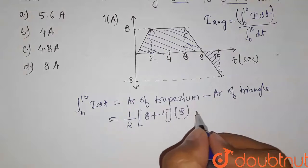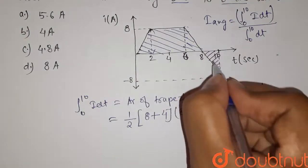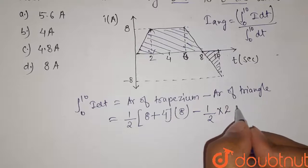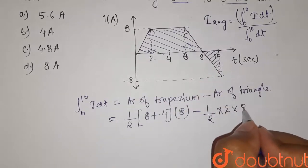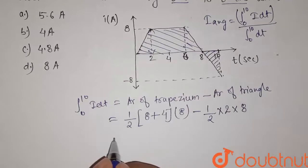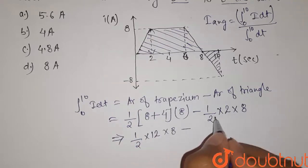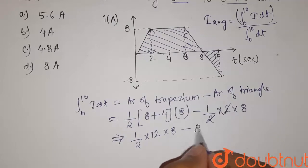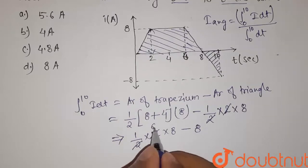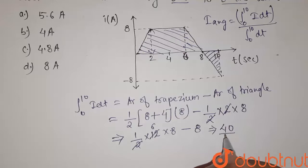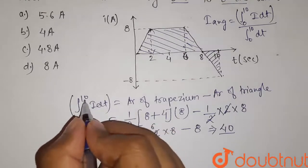So this is the area of trapezium minus area of triangle. This is our triangle; its area is given by 1 upon 2 into base, so base equals 2, into height, so height here is 8. Now calculate this value: 1 upon 2 into 8 plus 4 will be 12 into 8, minus here 2 and 2 will get cancelled out and this is 8. This will be equal to 6 times 8 is 48, and minus 8, so it will be equal to 40.